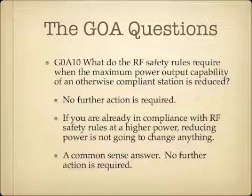What do the RF safety rules require when the maximum power output capability of an otherwise compliant station is reduced? The answer is no further action is required. If you've evaluated how much RF energy your station exposes people to at a certain power level and you decide to reduce that power level, you are reducing the amount of RF energy being produced. If you're already in compliance at a higher power, reducing the power is not going to make things worse. So no further action is required.